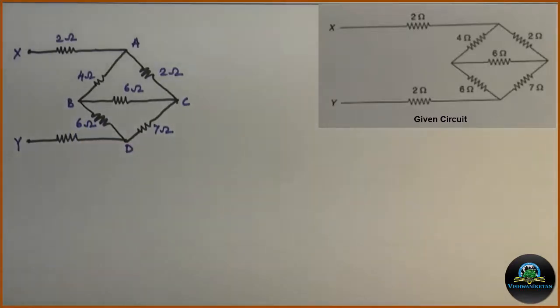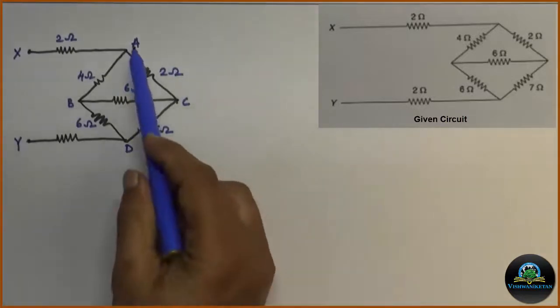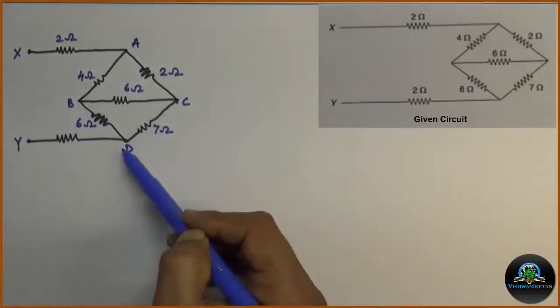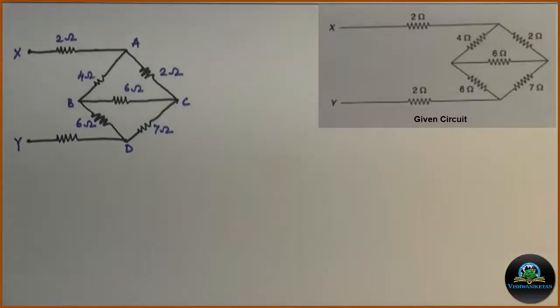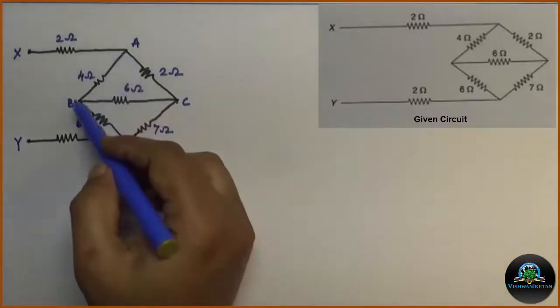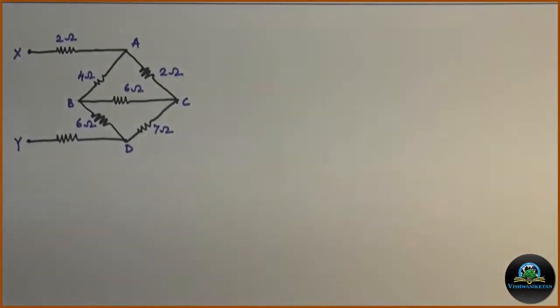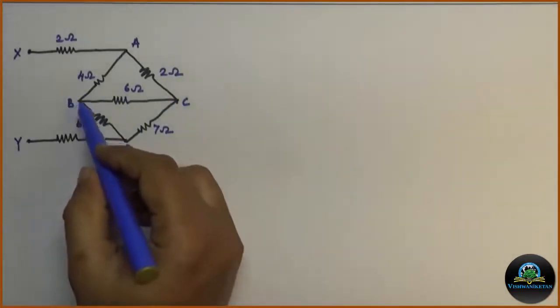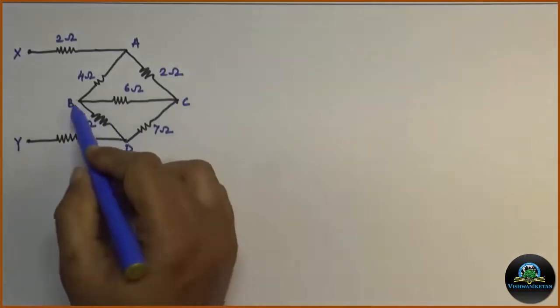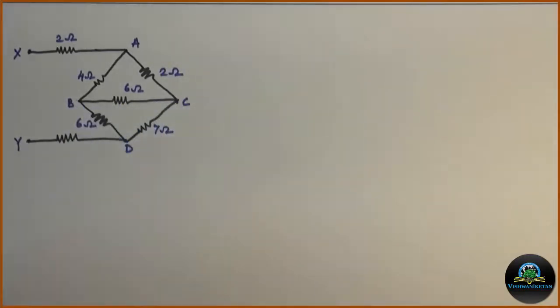So I have marked extra nodes A, B, C, D in the circuit. By observing the diagram, A, B, C is formed as a delta. Similarly, B, C, D has formed a delta connection.